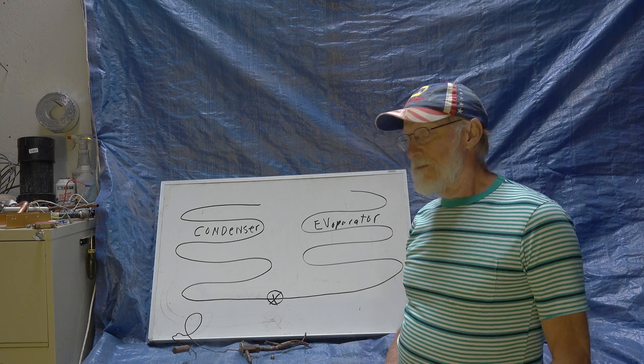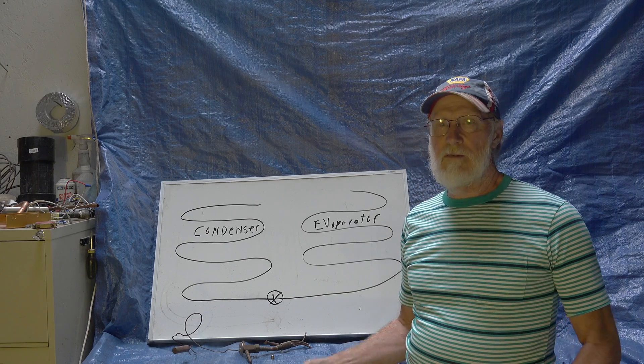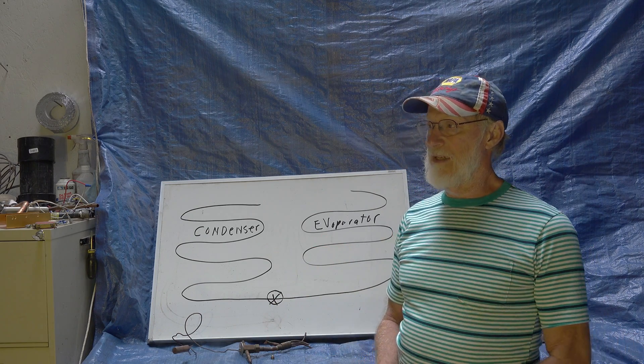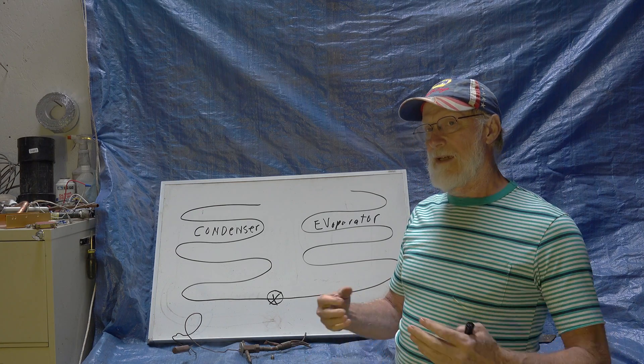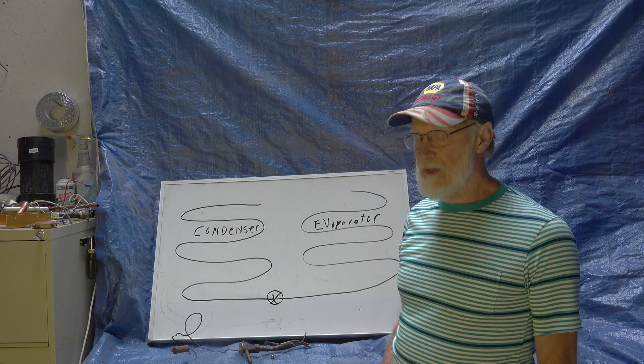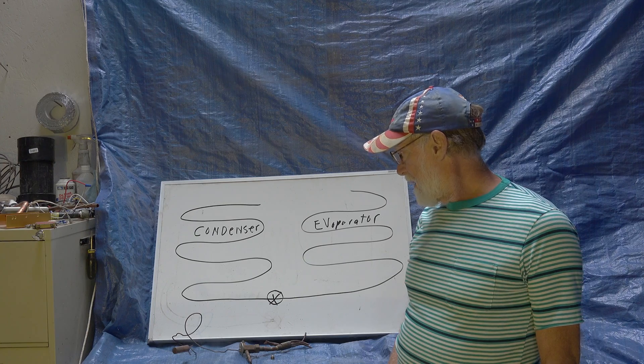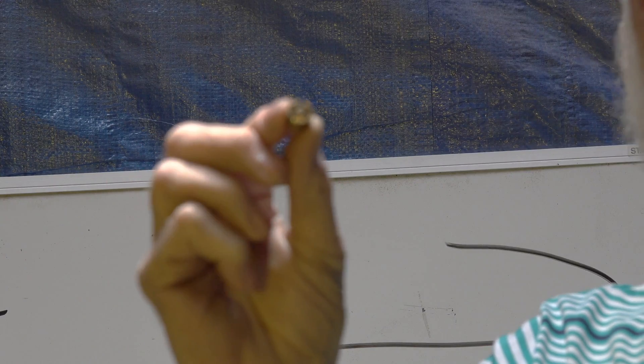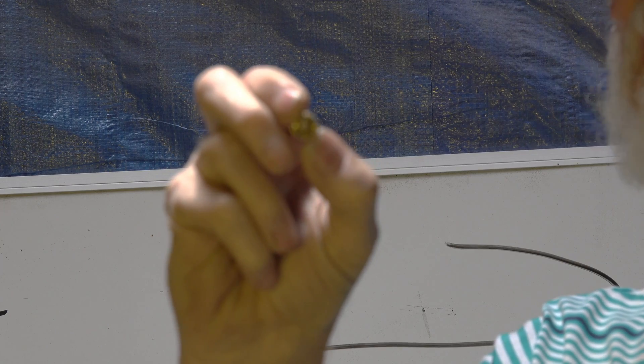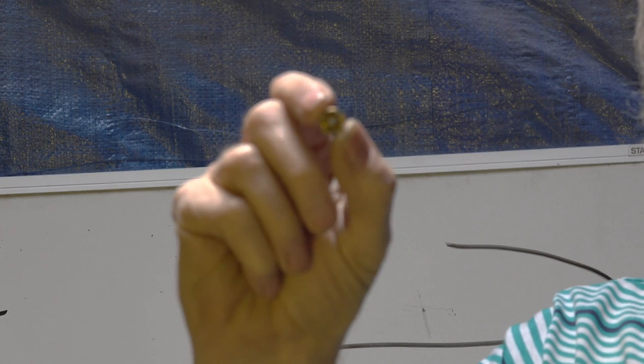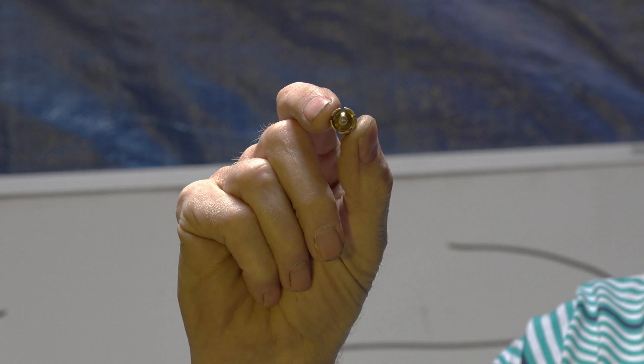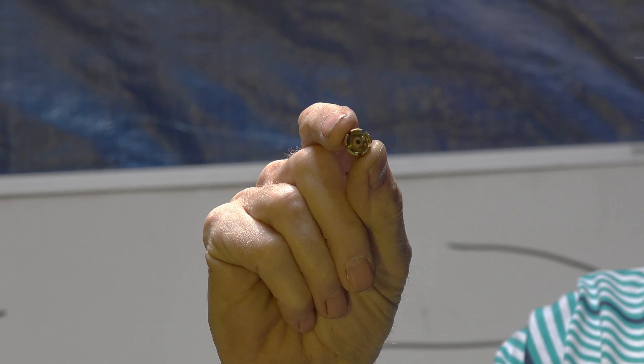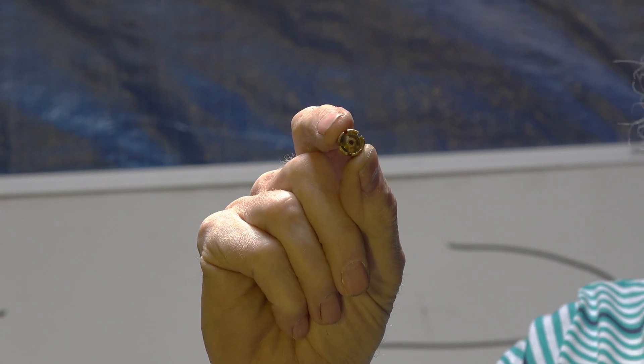We call it an expansion valve - it could be a thermostatic expansion valve, it could be a capillary tube, it could be a small orifice. I'll show you a couple of these things. That is the smallest one - it's just a little doohickey with a hole in it. I have other videos that show this a little closer, but that's just a restriction. That's all it is and that's all it ever has to be.